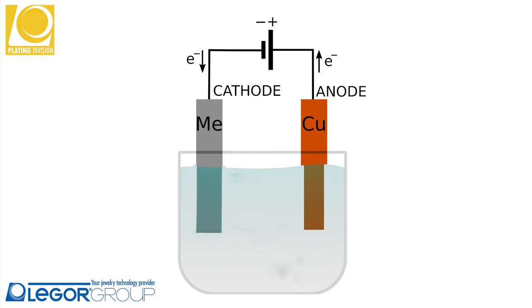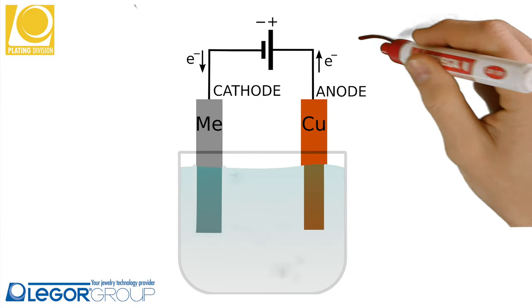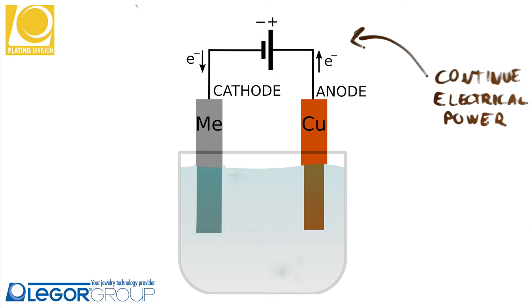These two objects will be included in the same system and attached to a source of continuous electrical power. When the electrical power is applied, the electrons, because of the direction of the electricity, start to move away from the anode.